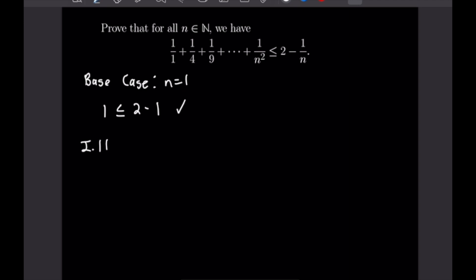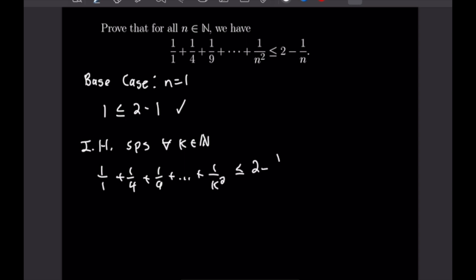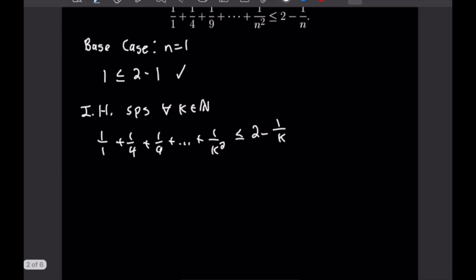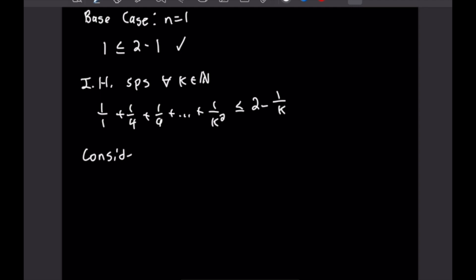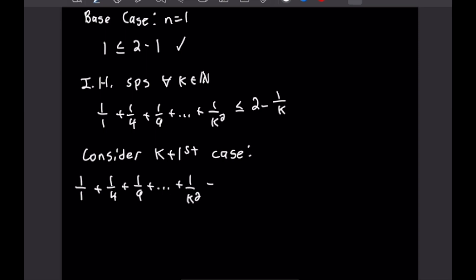Now we want to write out our induction hypothesis: suppose that for all k which is a natural number, 1 over 1 plus 1 over 4 plus 1 over 9 plus all the way up to 1 over k squared is less than or equal to 2 minus 1 over k. Now we want to consider the k plus first case, which will be that same sum plus one more term: 1 over k plus 1 squared.